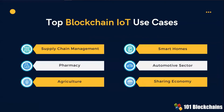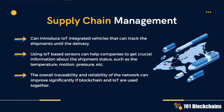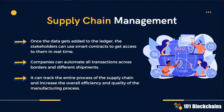The use cases of IoT adoption in blockchain are various. In supply chain management, IoT-based sensors can help companies get crucial information about shipment status. Blockchain and IoT combined improve the overall traceability and reliability of the network. IoT sensors on blockchain can track end-to-end supply chain processes and increase the overall efficiency and quality of the manufacturing process.